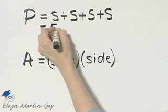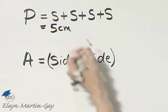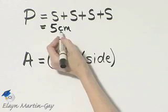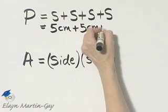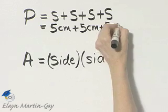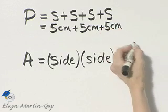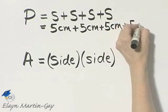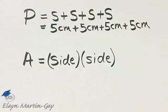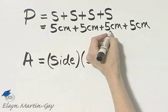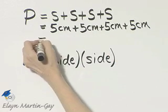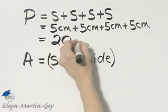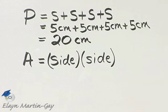Each side measures 5 centimeters. So that's 5 centimeters, plus 5 centimeters, plus 5 centimeters, plus 5 centimeters. Let's find that sum: 5 plus 5 is 10, plus 5 is 15, plus 5 is 20. So that's 20 centimeters, and that is the distance around the square.